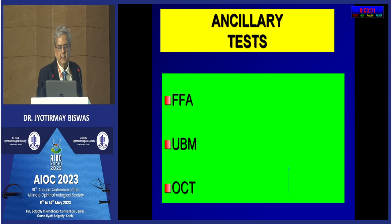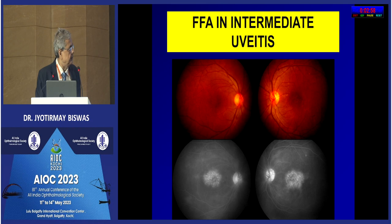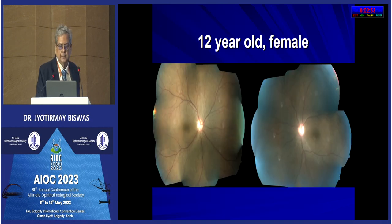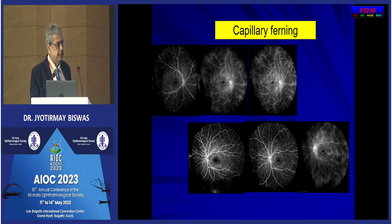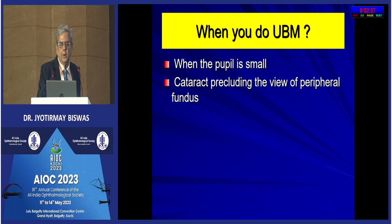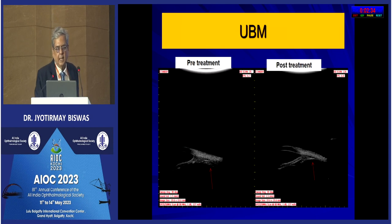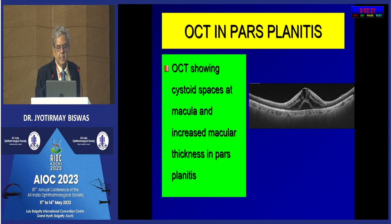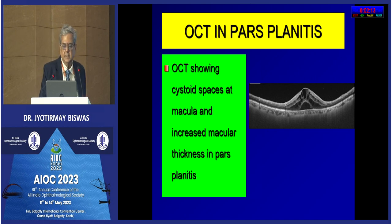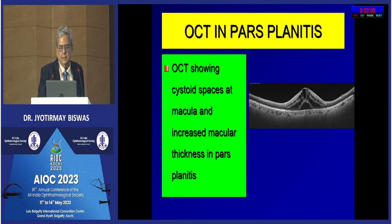FFA and UBM are done in selected cases. FFA can show petaloid hyperfluorescence. Interestingly, when we do FFA routinely particularly in children, we are seeing capillary fawning in a large percentage of cases, with staining of the optic disc. When the pupil is small or cataract precludes peripheral fundus view, I get UBM done. UBM shows exudates in the pars plana region, which disappear with treatment. OCT can show cystoid spaces of the macula and increased macular thickness. If I see a dull foveal reflex I do OCT, which can pick up cystoid macular edema.